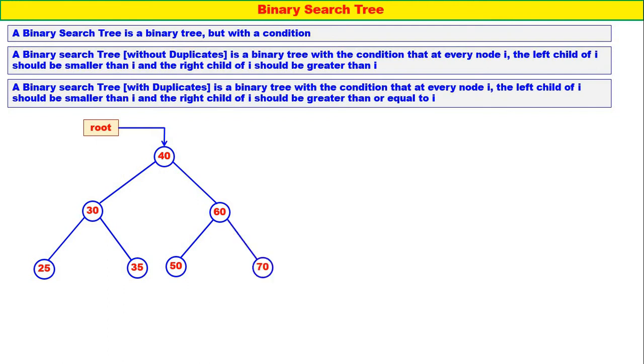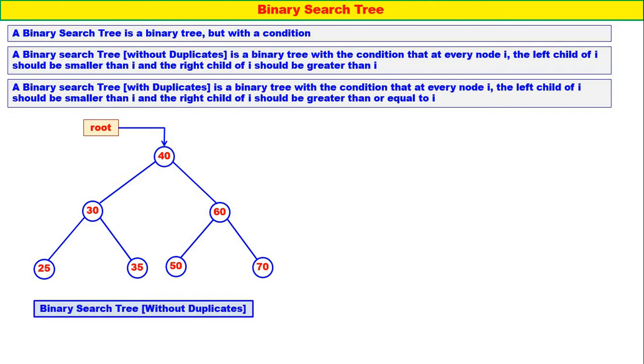70 — it is greater than 60. So this is a binary search tree without duplicates. No duplicate elements are there.